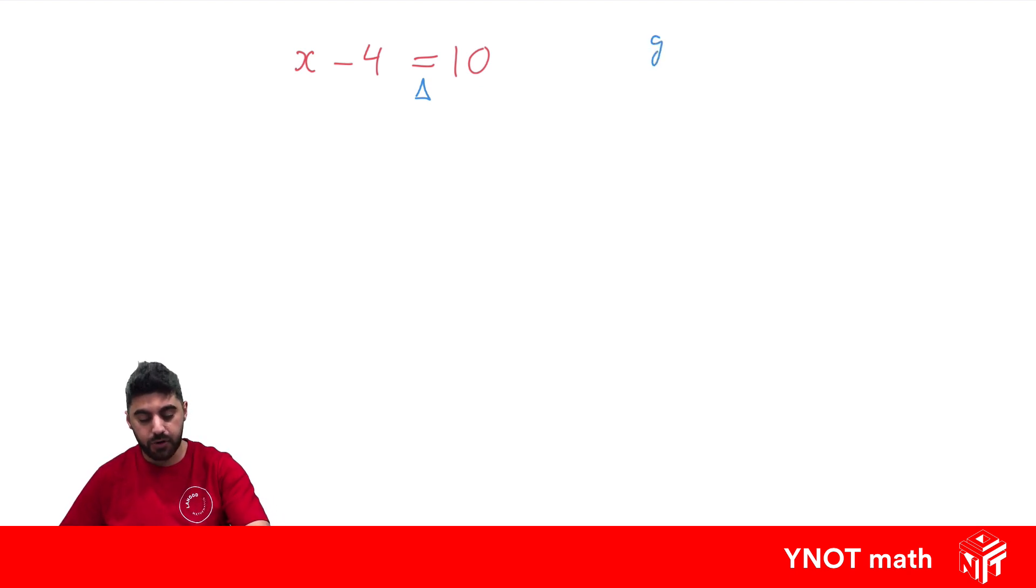We need to get the pronumeral on its own, so in this case our pronumeral is x and we need to get rid of that minus 4. To get rid of a minus 4 we need to do the opposite, and the opposite of minusing 4 is adding 4. Remember it's a seesaw, we need to balance it out, so we're going to plus 4 to the other side as well because by doing that, minus 4 plus 4 gives us 0.